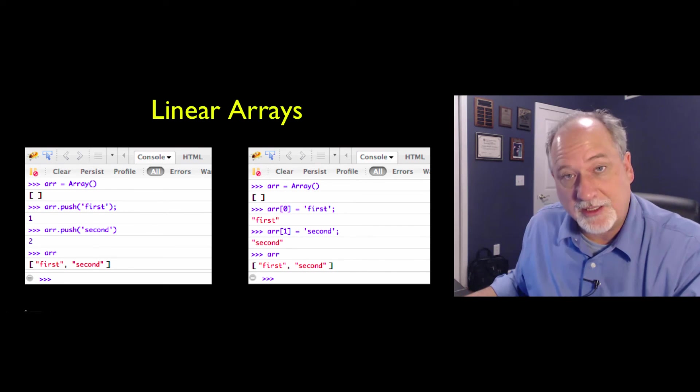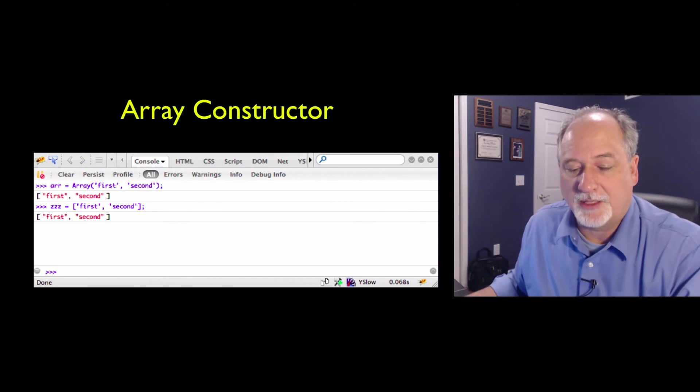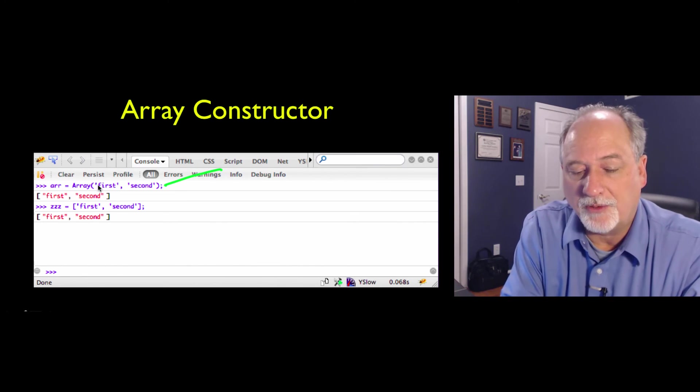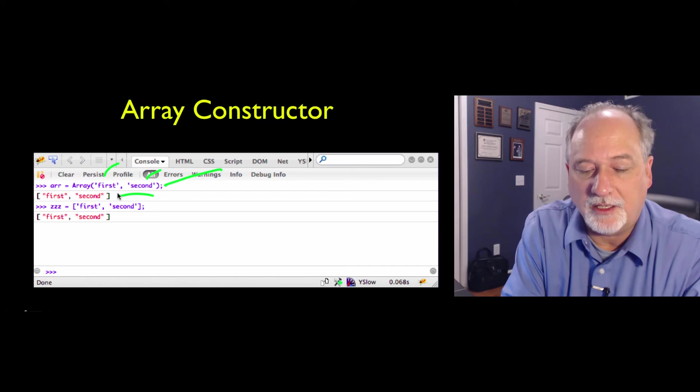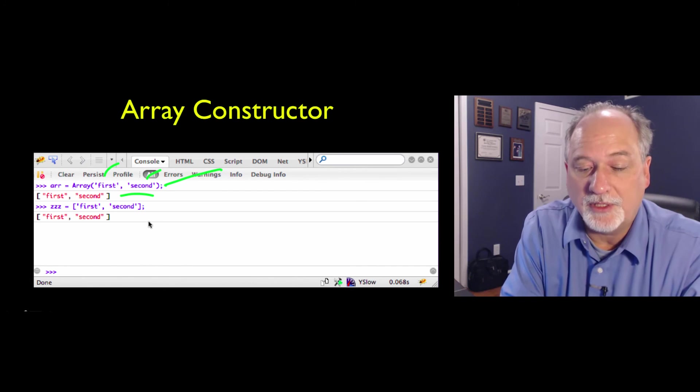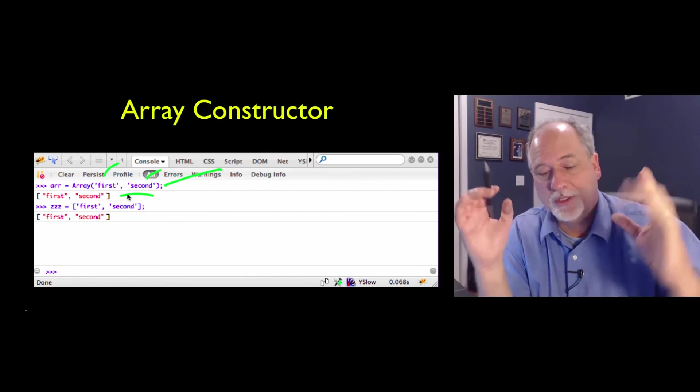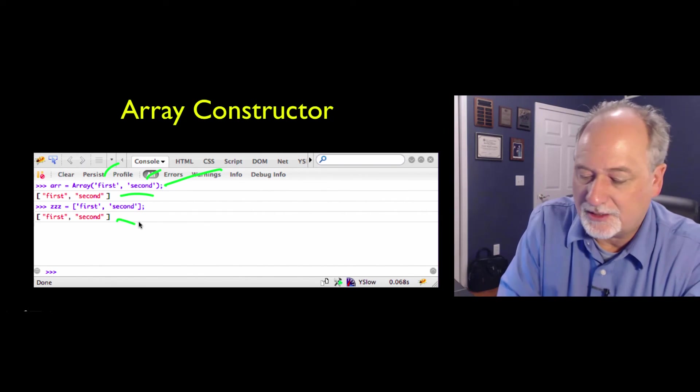You use the index operator as you might expect. You can also use the array constructor where you say array. And then you have a thingy and a thingy, and then you've got a two item list. Or you can use the constant syntax which is square brackets, and you get the same kind of a thing.